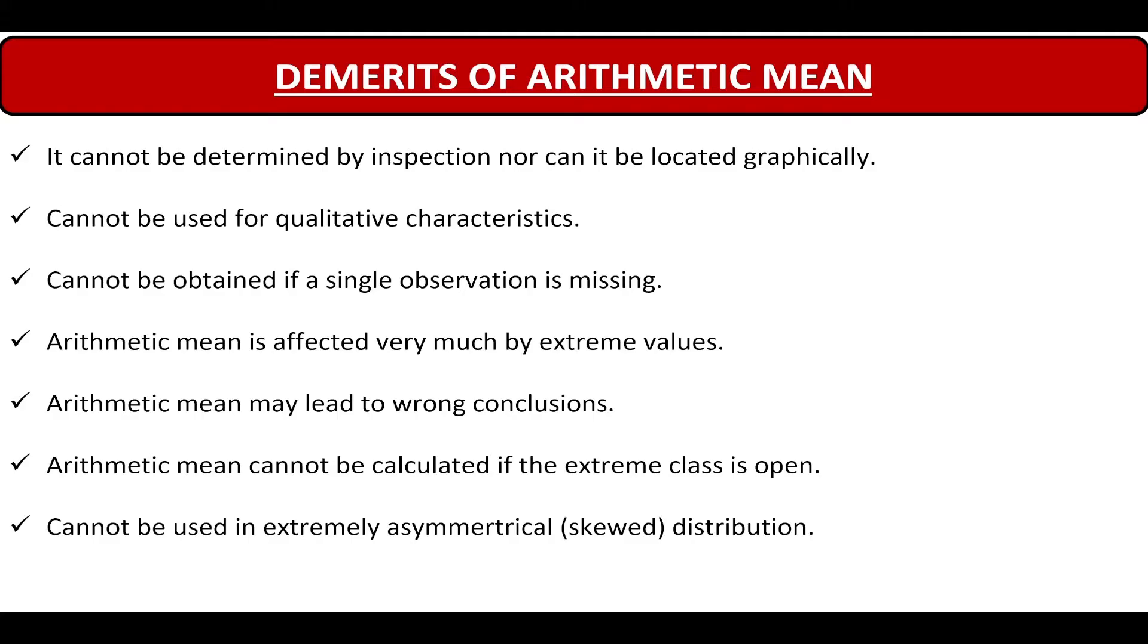Even if one value is missing, we cannot calculate the mean. Next, arithmetic mean is affected very much by extreme values. This is the reason why in data science we use median in case of outliers.